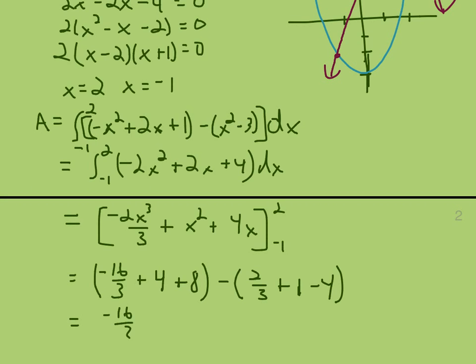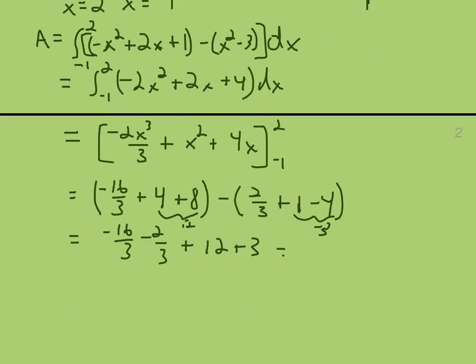And negative 16 thirds minus 2 thirds, this together is 12, so plus 12. This together is negative 3, but it's minus that negative 3, so plus 3. That's negative 18 over 3, which is negative 6. And negative 6 plus 15 is 9. Area is 9.